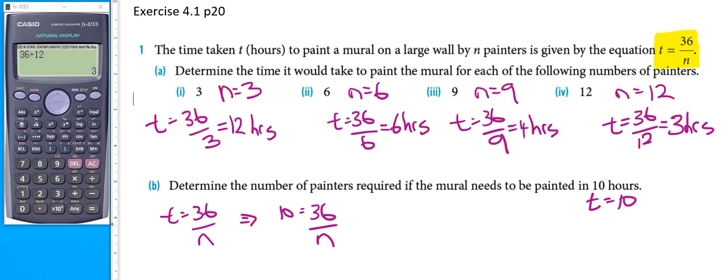We need to rearrange this to get n equals. If I multiply both sides by n and then divide both sides by 10, the 10s cancel out and the ns cancel out. So the equation becomes n on the left-hand side and 36 divided by 10 on the right-hand side.